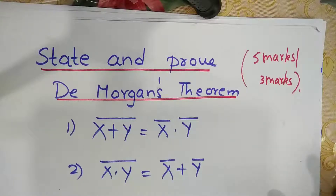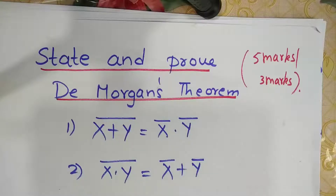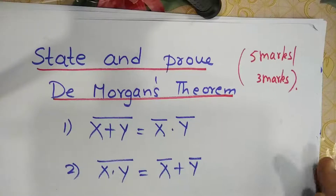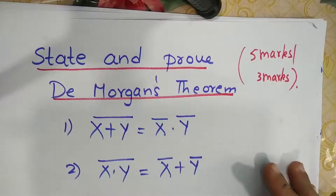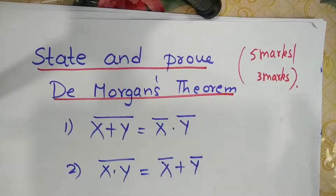This question is asked for 5 marks, and you need to prove both the theorems, or sometimes only one theorem is asked for 3 marks. It can be proved algebraically or through the truth table. In this video session, I am going to tell you how to do it algebraically. In my next session, I will tell you how to do it through the truth table.